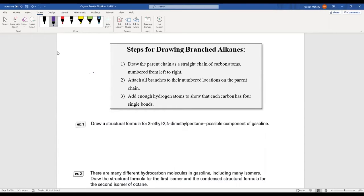Let's try this example first: 3-ethyl-2,4-dimethylpentane, which is a component of gasoline. I notice here the backbone is a pentane backbone, there is an ethyl on carbon number three, there are two methyls—one on carbon two, one on carbon four. Let's start with the backbone, so pentane backbone means I've got five carbons: one, two, three, four, five arranged in a line like this.